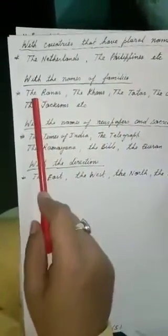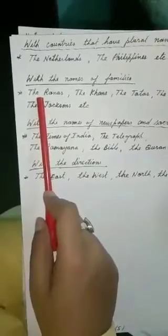With the names of families also you have to use THE. For example, the Naranas, the Khans, the Tartars, the Guptas, the Jacksons.